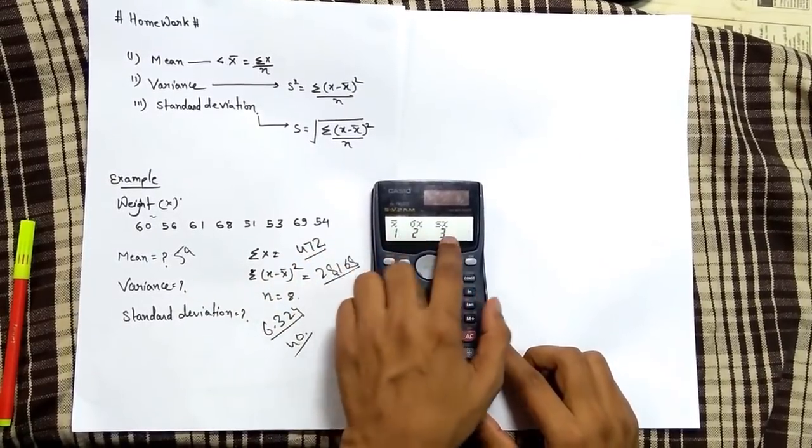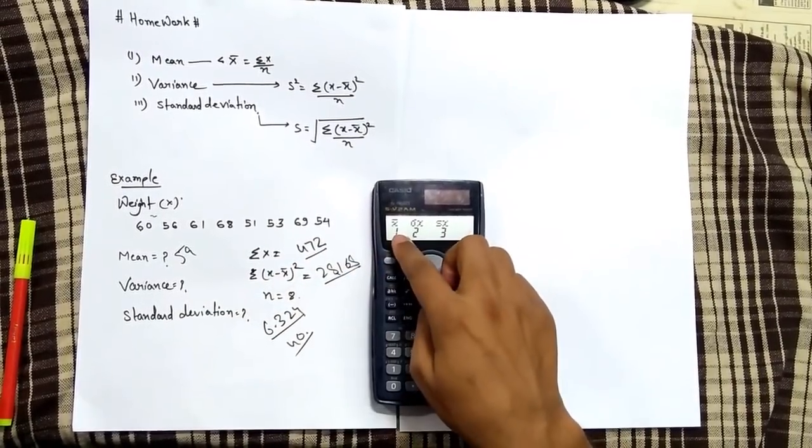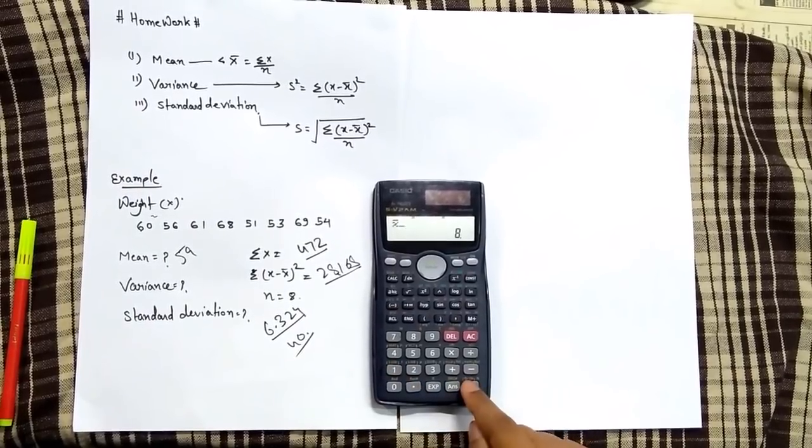There are three symbols. I am interested in calculating mean, so I'll press 1 and then press equal. So our mean is 59.